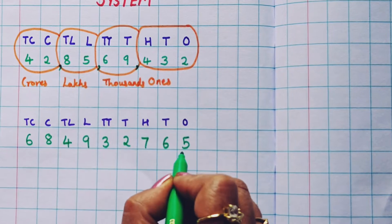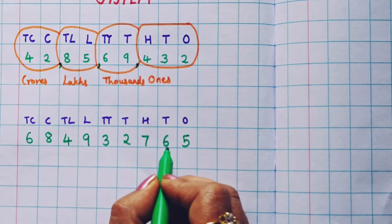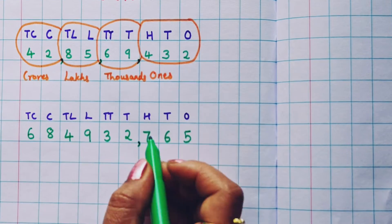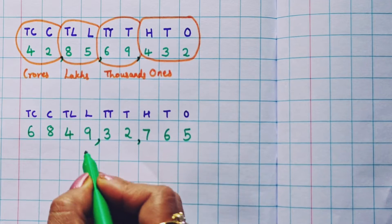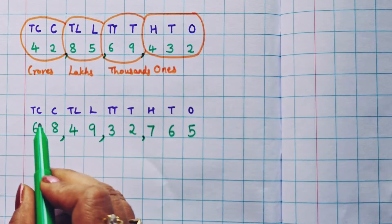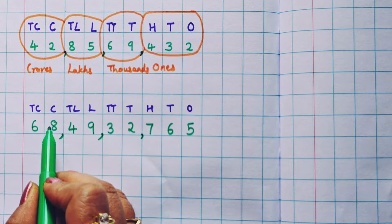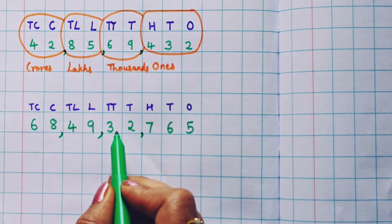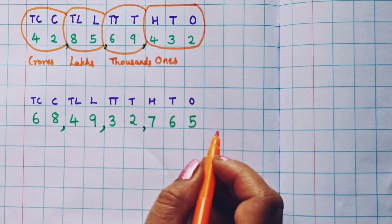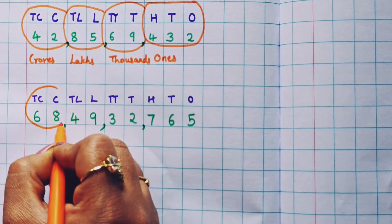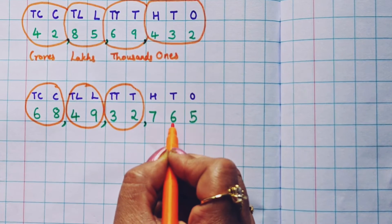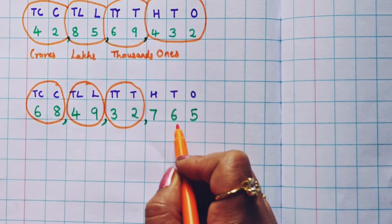How are we going to give the commas? We are going to start from the ones place. The first comma will come after the hundreds place, so here I will get the first comma. Thereafter, after every two digits, we give a comma — so thousands, ten thousands, here I give one comma; lakhs, ten lakhs, here I give one comma. Now how we are going to read this number: these both are coming under the crores group, so 68 crore, 49,32,765. Like this, we write this number.